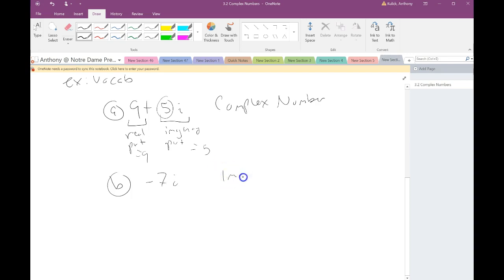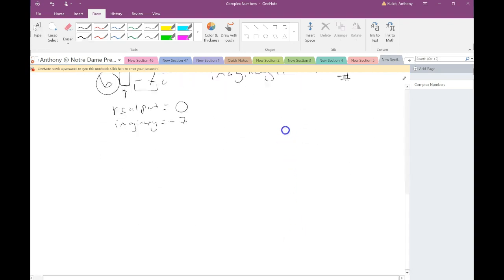What if I say negative 7i? Well, this is an imaginary number. But all imaginary numbers are also complex numbers. So here, the real part is 0. Notice there's nothing here. And the imaginary part is negative 7, the coefficient on the i. So that's kind of what we're talking about when we talk about imaginary or complex numbers.